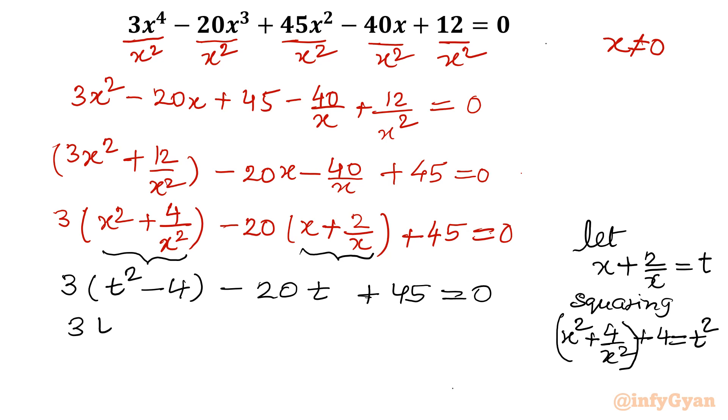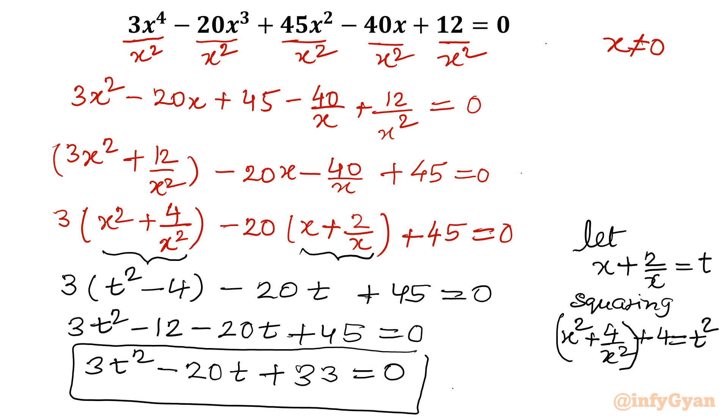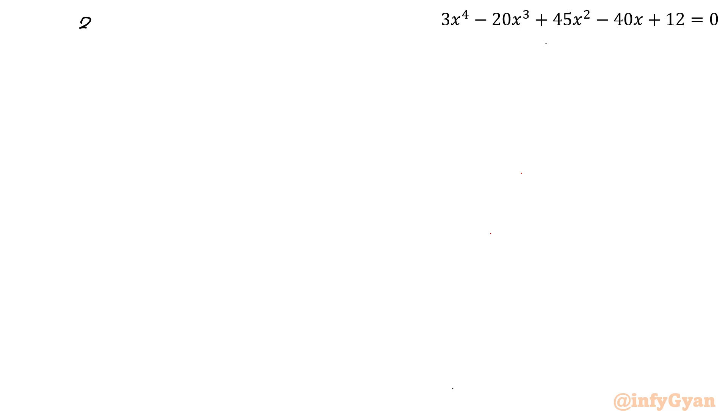Let us expand. 3t square minus 12 minus 20t plus 45 equal to 0. So I can write 3t square minus 20t then 33, 45 minus 12 is 33, equal to 0. Now we have to solve this quadratic equation. I will use splitting of central term or middle term. That is also possible because I can see 3 times 33 is 99 and 11 times 9 is 99, 11 plus 9 is 20. So let me write here 3t square minus 20t plus 33 equal to 0.